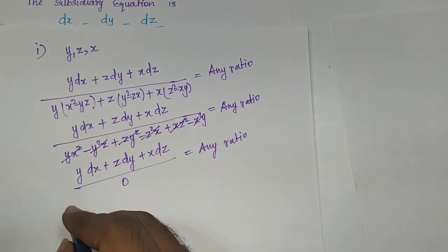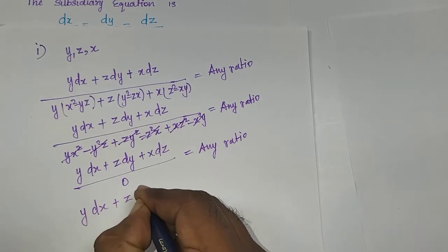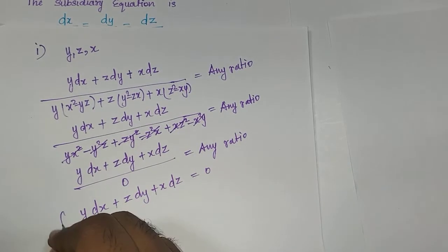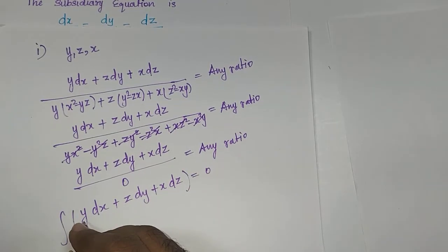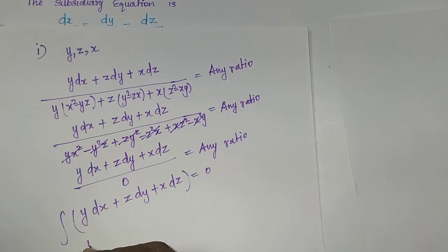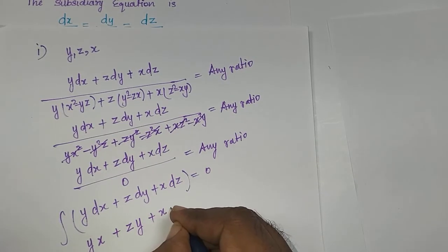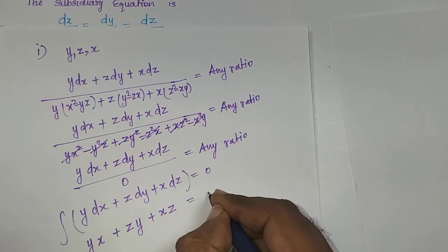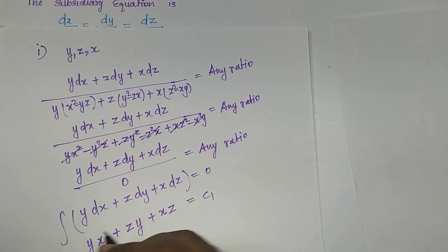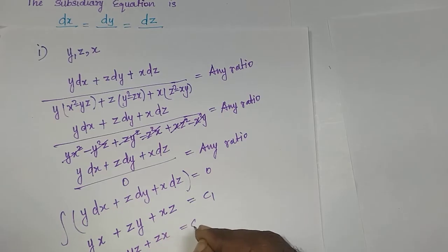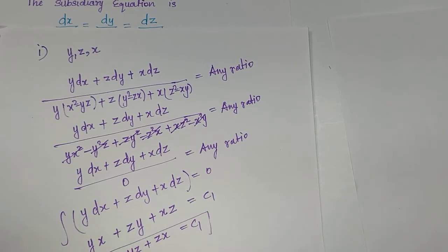Since the denominator is 0, shifting to the right-hand side gives: y·dx + z·dy + x·dz = 0. Integrating: y is constant so integrating x·dy gives xy; z is constant so integrating z·dy gives yz; x is constant so integrating x·dz gives zx. Therefore C1 = xy + yz + zx.